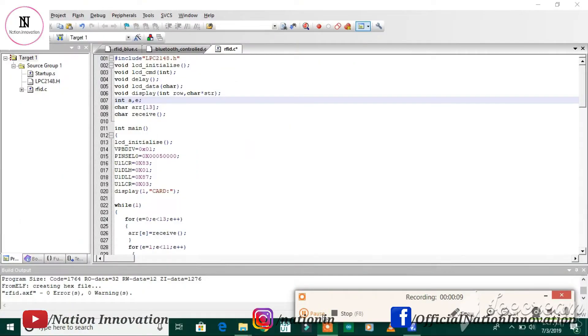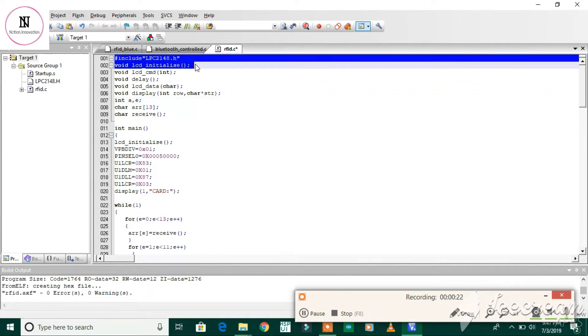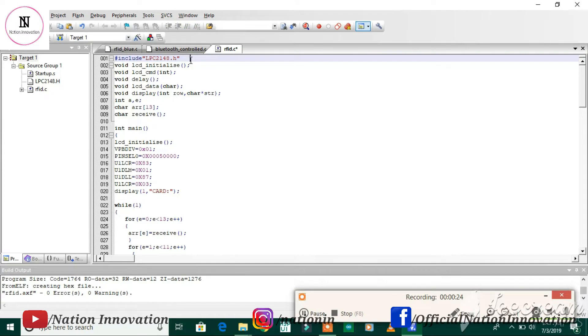This is the code for RFID module interfacing with the ARM7 LPC2148 microcontroller. The first line is the header file for the LPC2148 microcontroller, and these are the LCD functions for LCD interfacing.